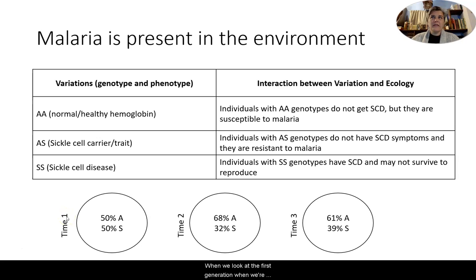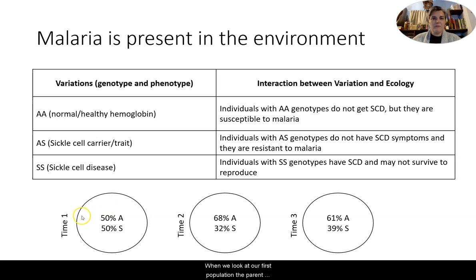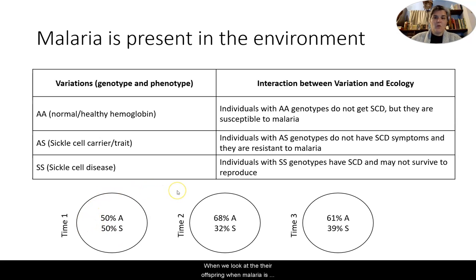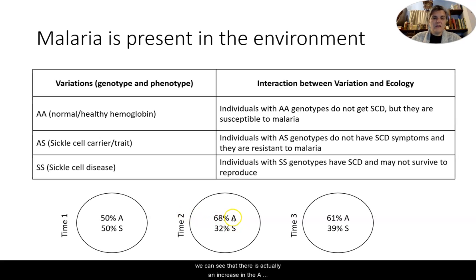When we look at gene pool frequency — that is, the frequency of the presence of alleles in a population over time — in the parent population we can see it is 50 percent A and 50 percent S. When malaria is present in the environment, this parasitic disease can be fatal, and we can see that there is actually an increase in the A allele up to 68 percent, and a decrease in the S allele down to 32 percent.